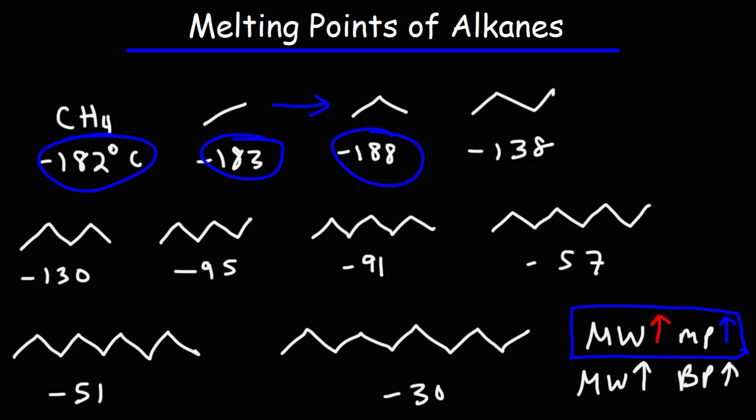So propane has the lowest of the melting points of the alkanes listed here, which is kind of strange. But after propane, the trend follows the molecular weight. As you add more and more carbon atoms, the melting point will increase.